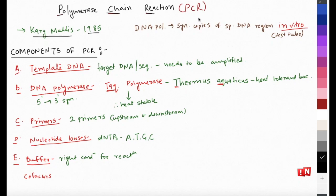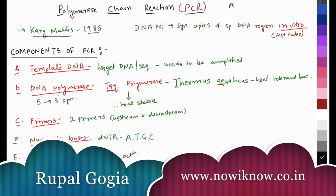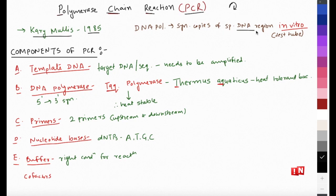Welcome back. Today we are talking about PCR - Polymerase Chain Reaction. A chain reaction means something is happening over and over again, so it's a chain reaction of DNA synthesis where a specific region of DNA gets amplified or replicated over and over again in vitro. When in the lab we are trying to amplify a specific region, we increase the number of copies of that particular region - that technique is called PCR. PCR was developed by Kary Mullis in 1985.